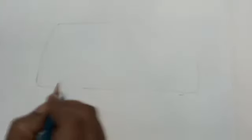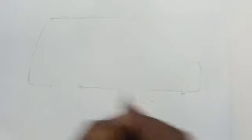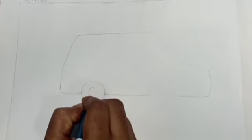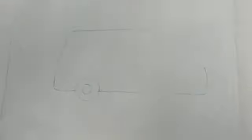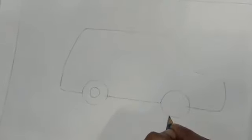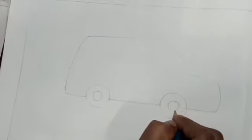We will erase this part and then we will draw a circle here. We will make a smaller circle inside the bigger one. Then we will erase this part and make one more circle here, and again a smaller circle inside the bigger one.